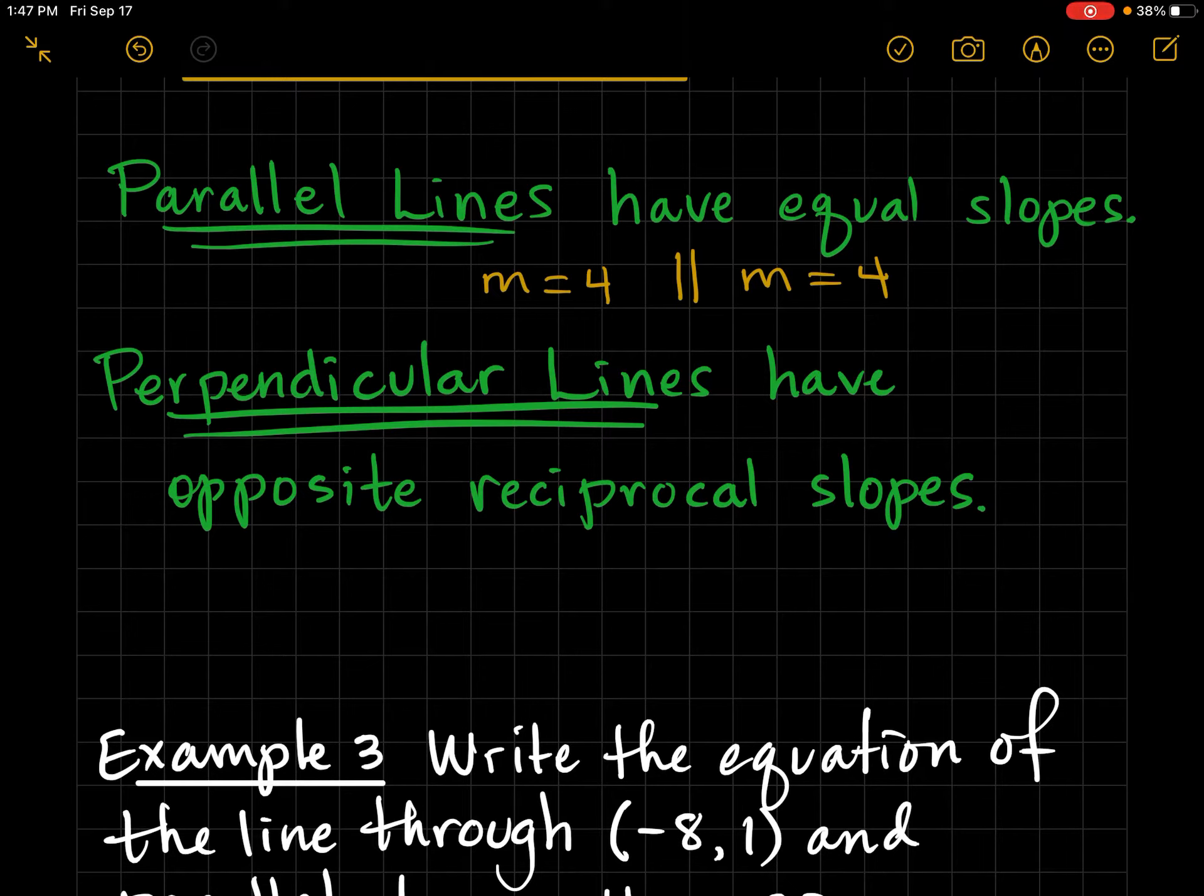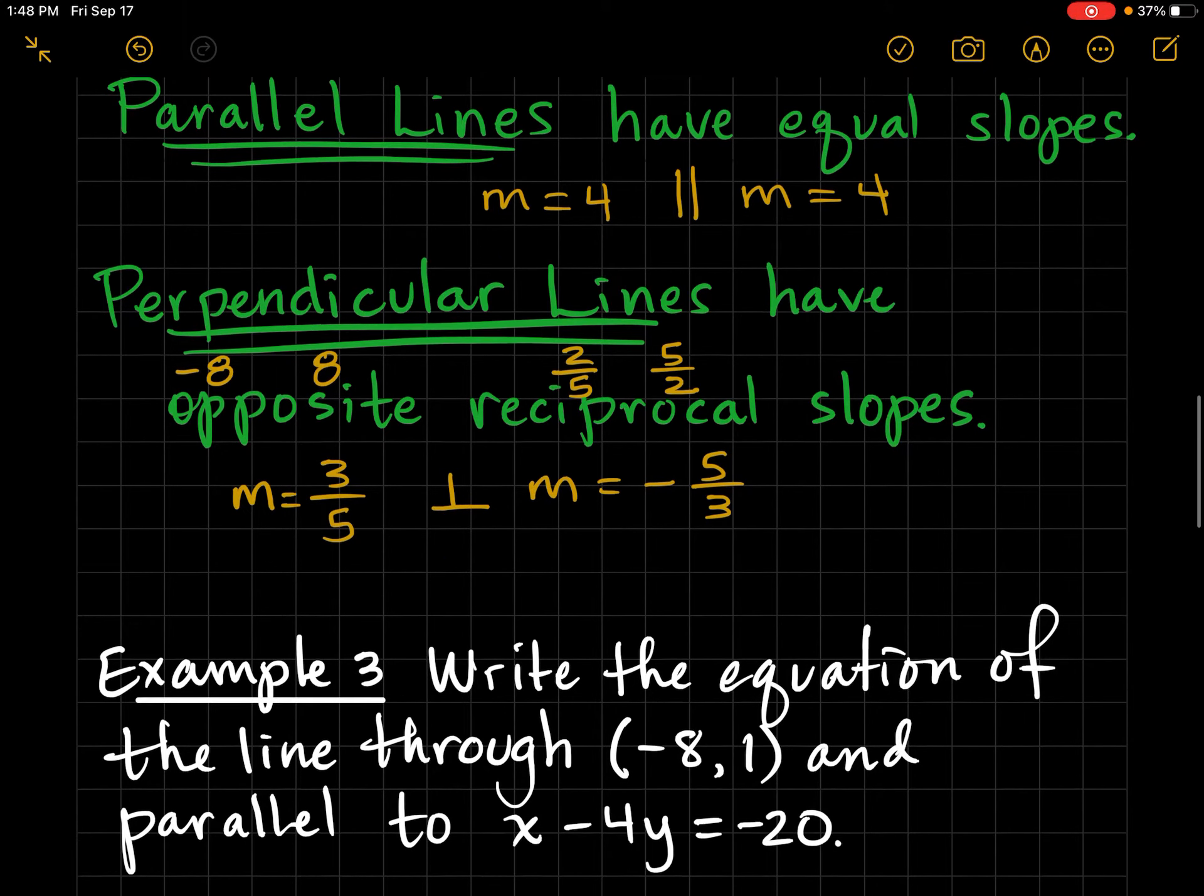And perpendicular lines have opposite reciprocal slopes. Opposite, so opposite means change the sign. Like the opposite of negative 8 would be positive 8. Reciprocal means to flip it. So for example, you have 2 fifths. The reciprocal of that would be 5 halves. So when we say perpendicular lines have opposite reciprocal slopes, that means change the sign and flip it. So for example, we had a slope equals to 3 fifths. The perpendicular slope, remember that symbol, would be negative 5 thirds. So opposite and reciprocal.